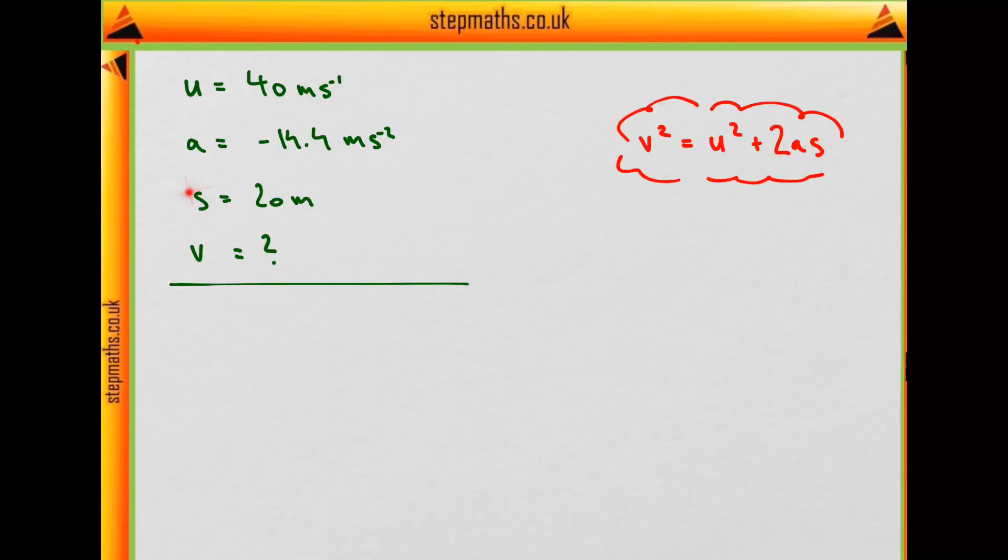And in fact, we have all the information we need to plug into this SUVAT equation, that the final speed squared equals the initial speed squared plus 2AS, where this is the acceleration, and S is the distance.